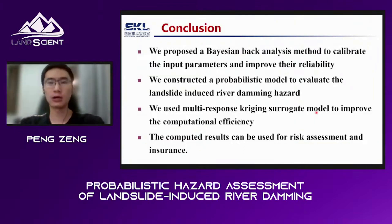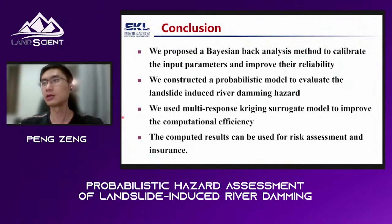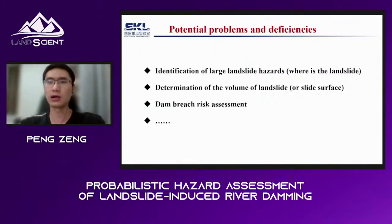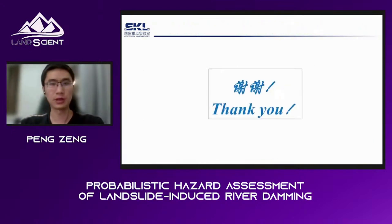In summary, we propose a Bayesian back-analysis method to calibrate input parameters and improve their distribution. We constructed a probability model to evaluate landslide-induced river damming hazards, and used a multi-response kriging surrogate model to improve computational efficiency. The computed results can be used for risk assessments and insurance. Future work should address identifying landslides around rivers, determining landslide volumes, and conducting dam breach risk assessment. Thank you for your attention.